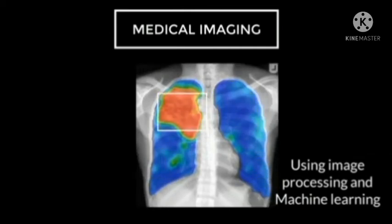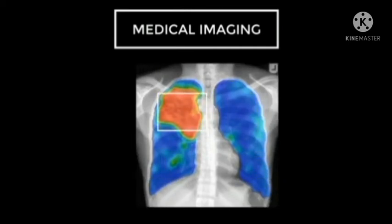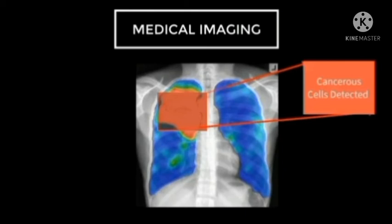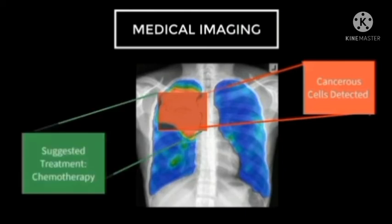Brain tumors and cancer can be detected at a very early stage, which can help save many lives. There are many research organizations in India and across the world doing groundbreaking research in this domain and hiring people familiar with image processing and machine learning.